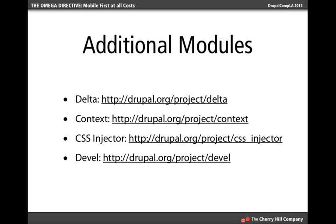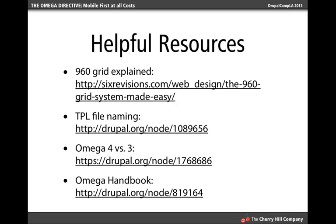Some helpful resources: the 960 grid blog post is from Six Revisions and the URL is in the slides. Also valuable is the TPL file naming conventions, which you'll need for overriding templates. And then the Omega handbook and an overview of Omega 3 versus Omega 4, which will also be useful.